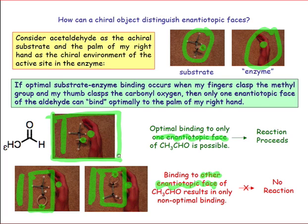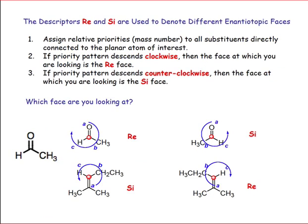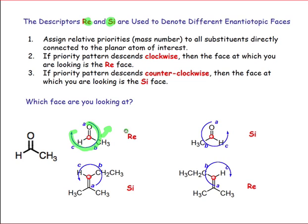Because the binding is non-ideal, we won't see reaction when that enantiotopic face is available. We use the descriptors Re and Si to describe different enantiotopic faces. The way we do this is by orienting the molecule such that we're looking down on the face of interest, then examining the priority of the three groups that define the plane we're looking at. If the three groups are oriented in a clockwise fashion from highest to lowest priority, then we're looking at the Re face.